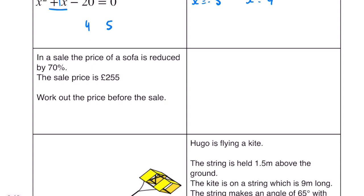In a sale the price of a sofa is reduced by 70%. That means 30% is equal to 255. So 10% if we divide that by 3 is equal to £85. So 100% which is the normal price will be £850.